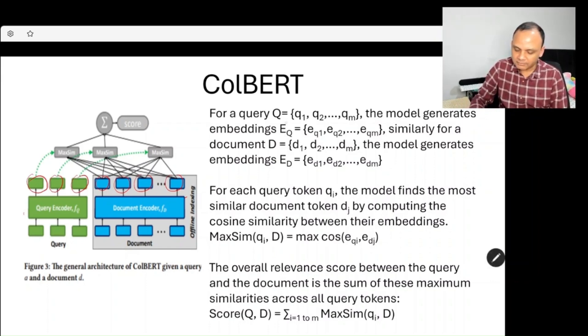For a query, we have q1, q2, qm as tokens, and the model generates embeddings for each token: eq1, eq2, and eqm.